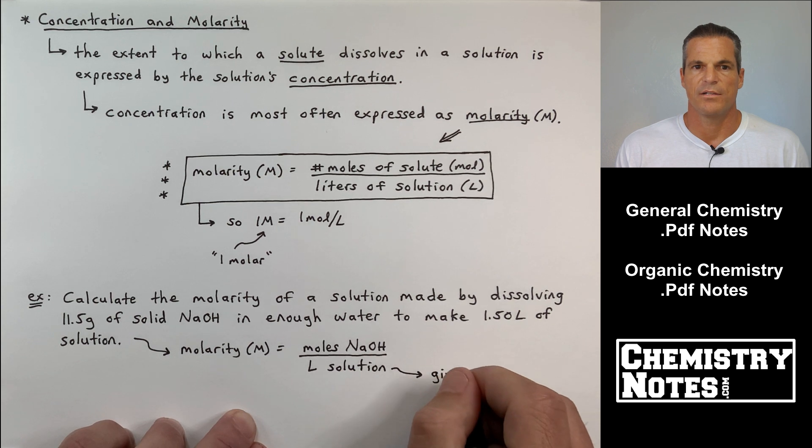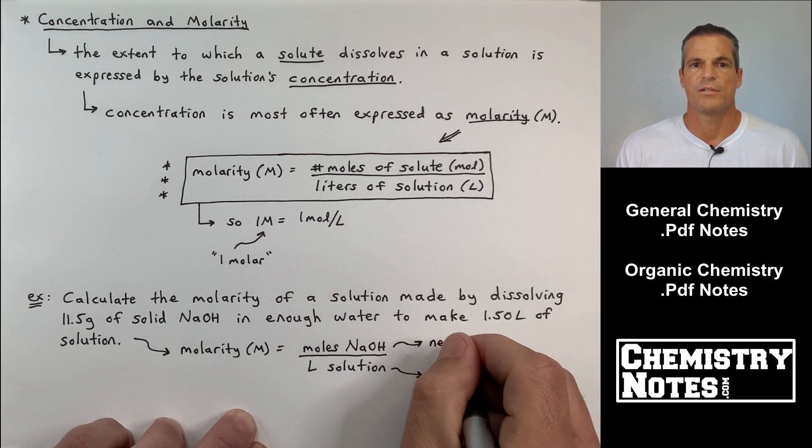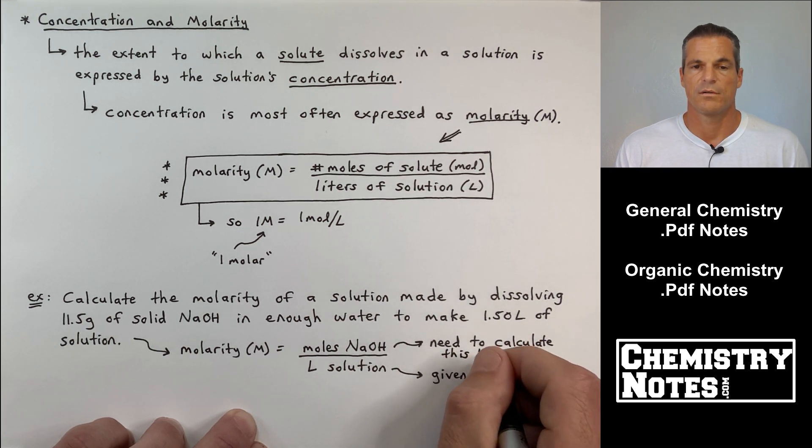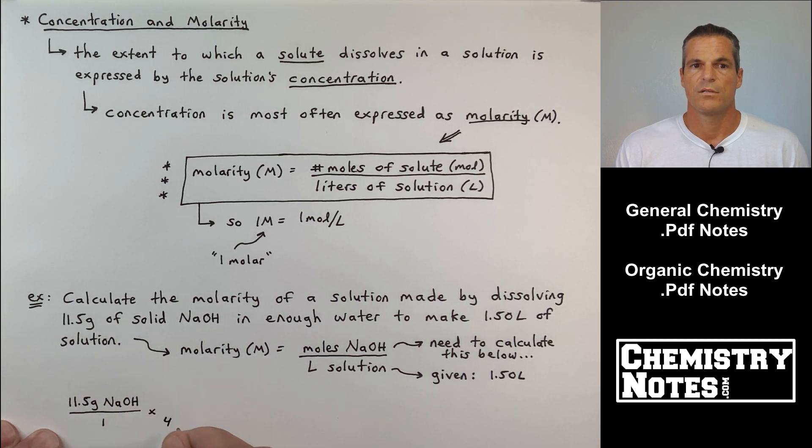Example: calculate the molarity of a solution made by dissolving 11.5 grams of solid NaOH in enough water to make 1.50 liters of solution. So it says calculate the molarity. So I immediately write down the molarity equation. Molarity, big M, is moles of NaOH per liter of solution. Now we need to calculate the numerator, moles of NaOH.